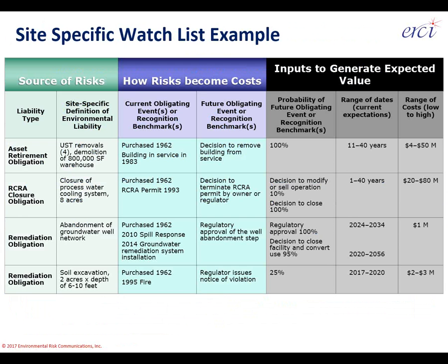A brief overview of how the watch list is laid out: the first two columns describe the liability type — which of the five liability types applies — and then identify the problem being worked on, not the solution. Environmental liabilities are supposed to be prices of problems for a balance sheet, not costs of candidate solutions. The second column is the site-specific definition of the problem.